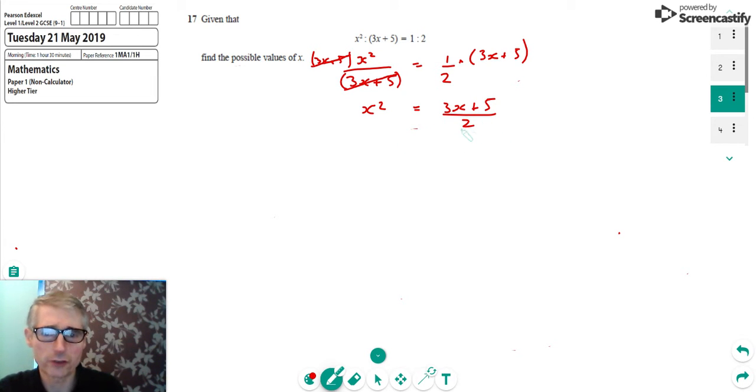And we've got 3x plus 5 over 2 on the right. And it's handy for us now to get rid of the 2 on the bottom there on the right hand side, which we can do by times in both sides by 2. Remembering that what we need to do to balance an equation is always to do the same thing to both sides. So the 2 will cancel then, and it will give us 2x squared equals 3x plus 5.